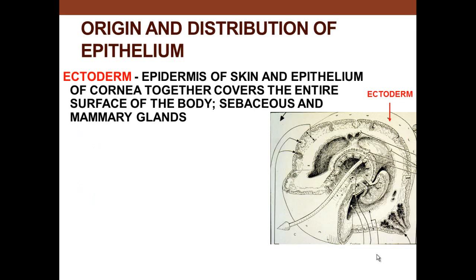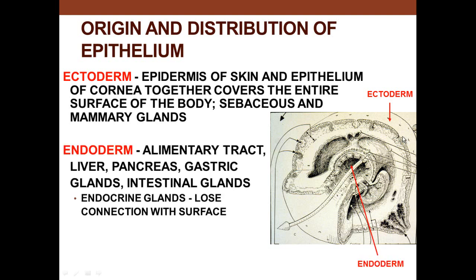The origin of epithelial cells comes from three basic germ cell lines. From the ectoderm, you get the epidermis of the skin and the cornea of the eye. Sebaceous glands, mammary glands, and tear glands also come from the ectoderm. From the endoderm, you get the GI tract, which gives rise to the pancreas. Endocrine glands lose their contact with the wall and become endocrine cells — they no longer connect to the surface and don't discharge on the surface.